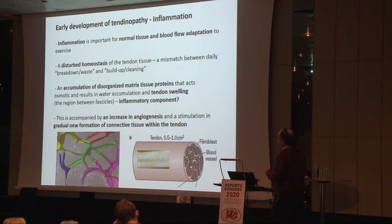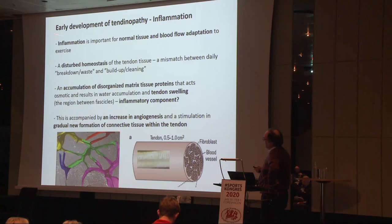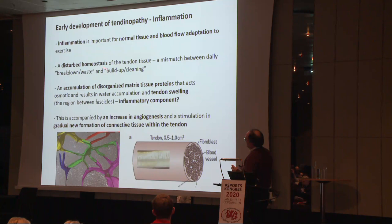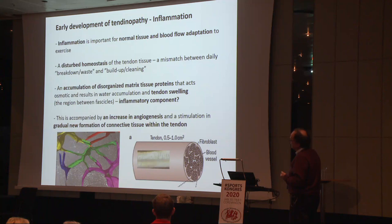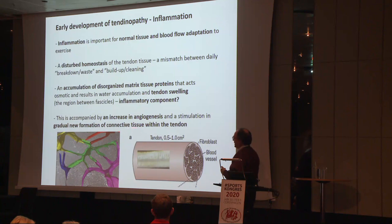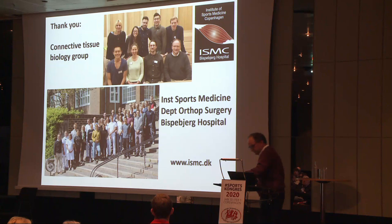I'm going to end by saying that inflammation is important for normal tissue and blood flow adaptation in the tendon — don't just block your physiological inflammation. There is a disturbed homeostasis of the tendon tissue when you overtrain: you probably build up a lot of waste tissue in here that requires water to come in, creating swelling that occurs relatively early. Then there will be an accumulation of this tissue. Where the inflammatory component fits into all of that is still to be determined. It is accompanied by an increase in angiogenesis that seems to appear relatively early, and then gradually — I didn't show the data — the only thing we know is that new tissue formation is increased but goes a little more slowly after the first three months. Thank you for your attention.